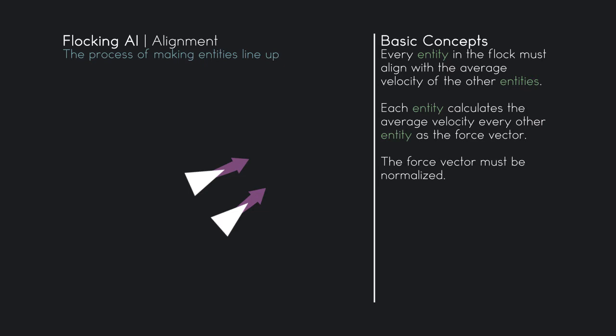So this is a very simple concept. We need to average out all the velocities of the other entities. Sum all the velocities up of every other entity and average them out. So sum them up and divide them by the count of entities. Then you normalize that and that's all we have to do. Very simple algorithm. We get an average rotation of all the other entities and eventually they'll all be pointing the same way.